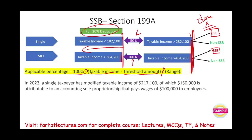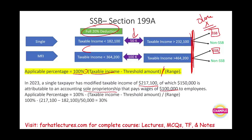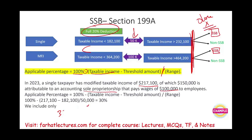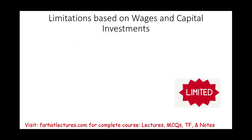Example for 2023: a single taxpayer has modified taxable income of $217,100, which falls between $182,100 and $232,100. This is attributable to a sole proprietorship in accounting that pays wages of $100,000. We compute the applicable percentage: $217,100 minus $182,100 equals $35,000 above the lower threshold. Dividing $35,000 by the $50,000 range gives 70%. So the applicable percentage is 100% minus 70% equals 30%. QBI, wages, and unadjusted asset basis are all multiplied by this 30%.